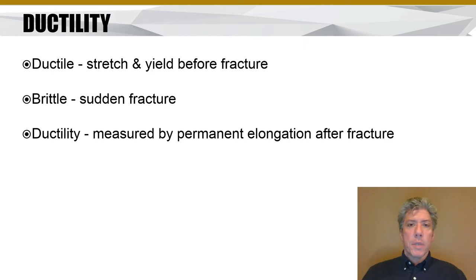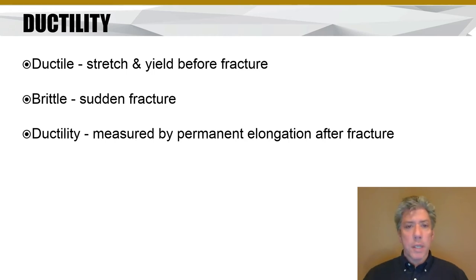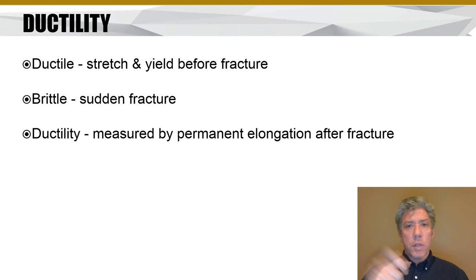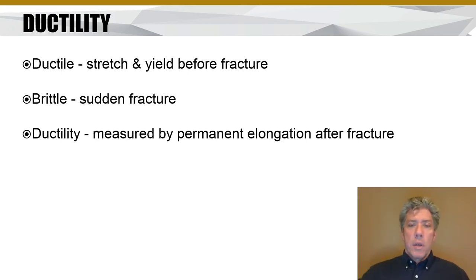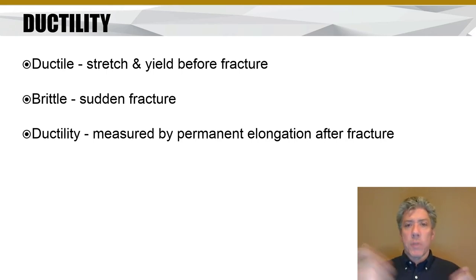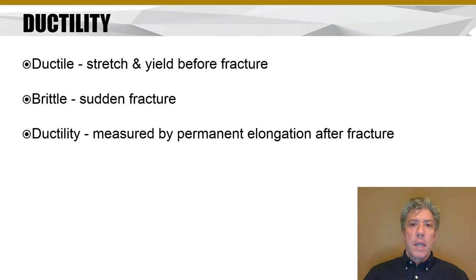Ductility is another important number — it's really just how much abuse a material can take before it fails and fractures, or how much it can stretch and yield before fracturing. Brittle materials are not ductile; they suddenly fracture. They stretch elastically and then all of a sudden they fail. Ductile materials, on the other hand, can stretch and be permanently elongated and yet not fail until much later. Think of the difference between a rubber band and a piece of granite — granite is brittle, while a rubber band can be stretched quite a lot before it pulls apart.